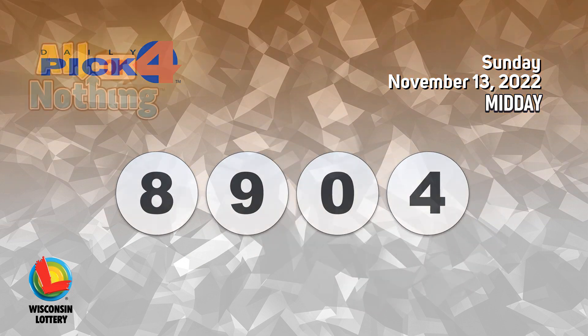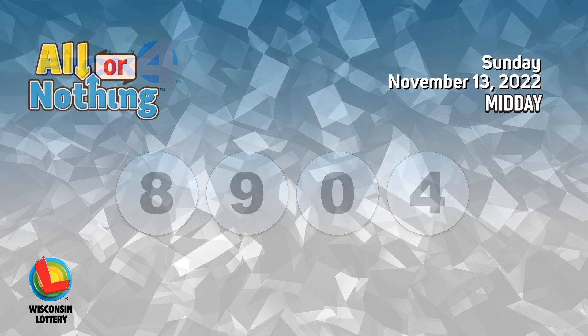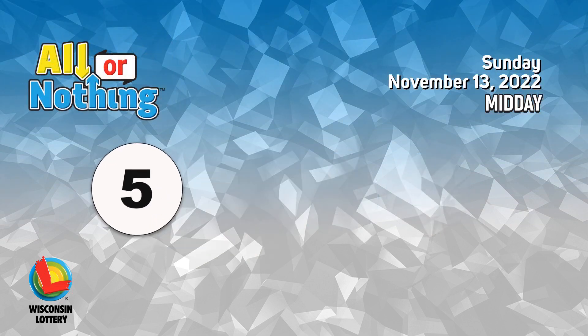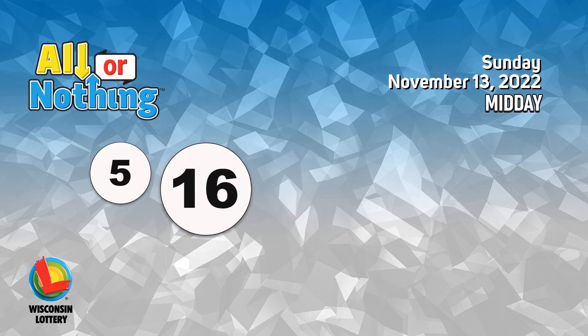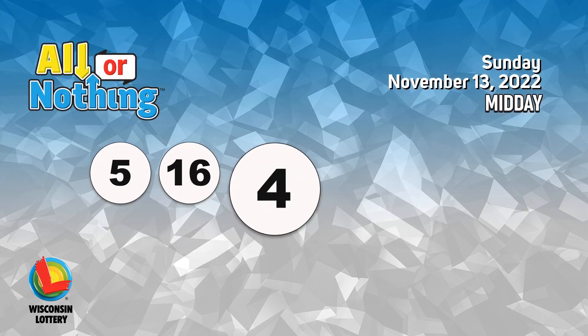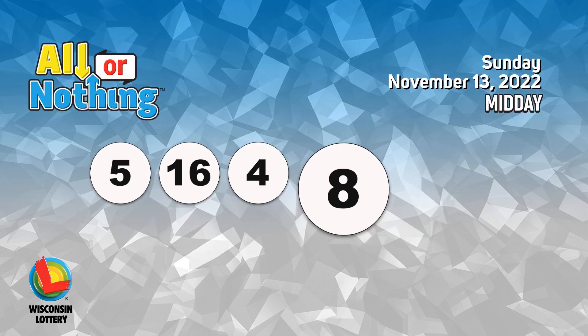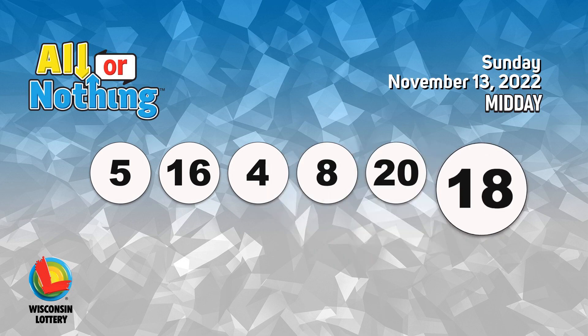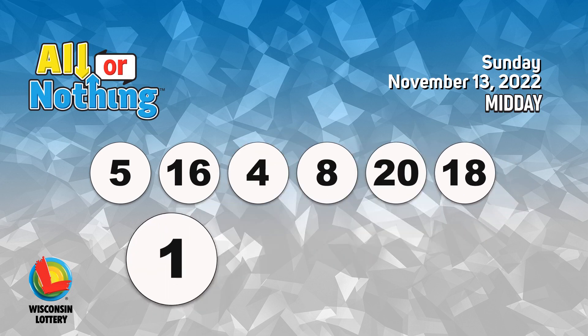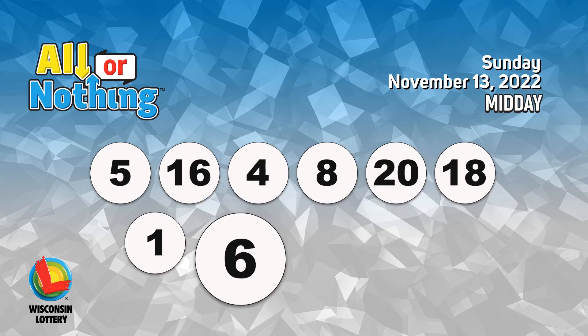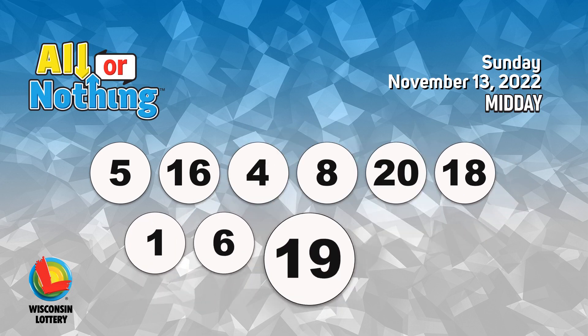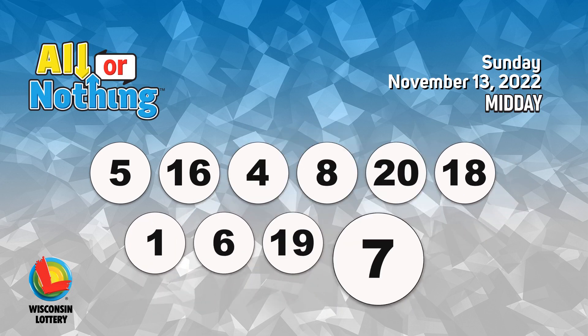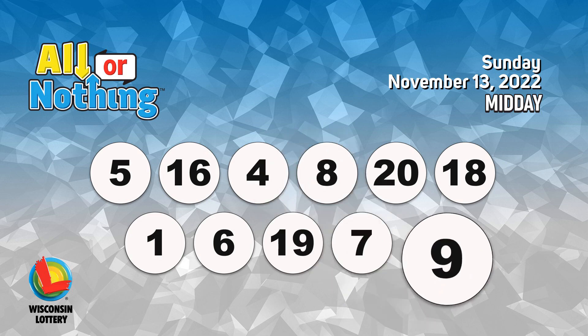The All or Nothing numbers are five, sixteen, four, eight, twenty, eighteen, one, six, nineteen, seven, nine.